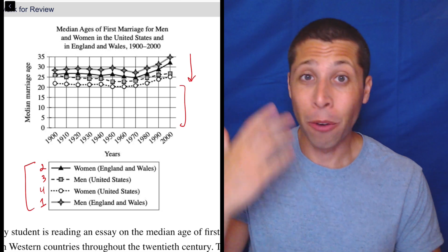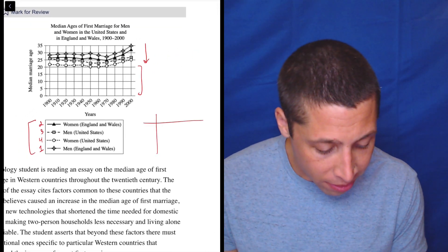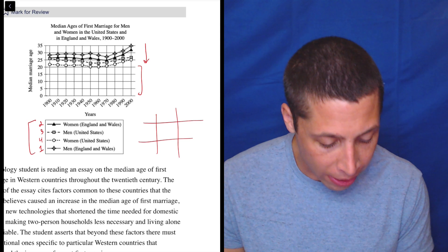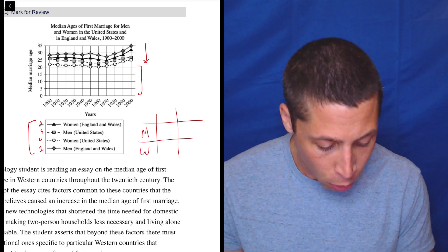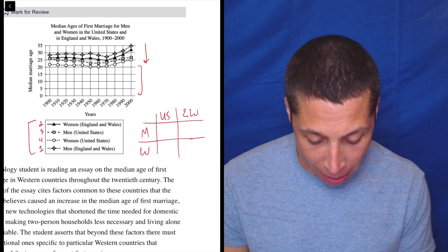You have scratch paper. Rewrite it. Come with a legend that makes sense to you. For me, creating this little chart here would really help. If I did like men, women, U.S., England, Wales, and then just did the shape. The U.S. men are going to be the square.